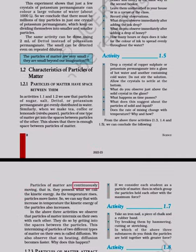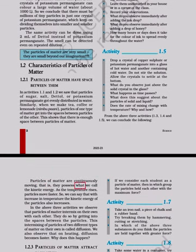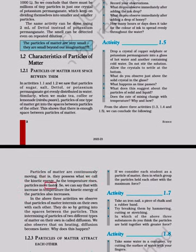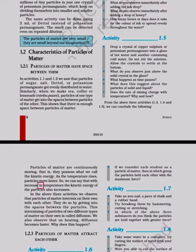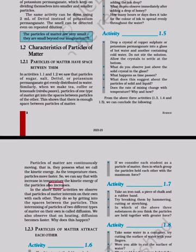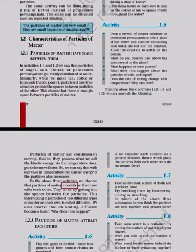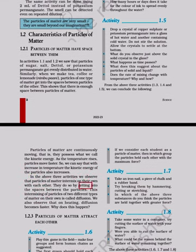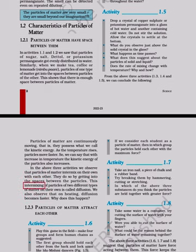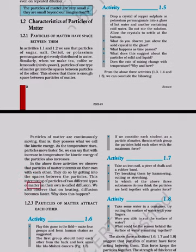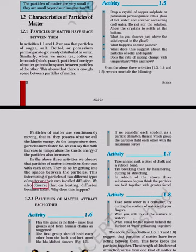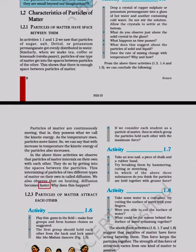Particles of matter are continuously moving, that is, they possess what we call kinetic energy. As the temperature rises, particles move faster. So we can say that with increase in temperature the kinetic energy of the particles also increases. Particles of matter intermix on their own with each other by getting into the spaces between the particles. This intermixing of particles of two different types of matter on their own is called diffusion. We also observe that on heating, diffusion becomes faster.